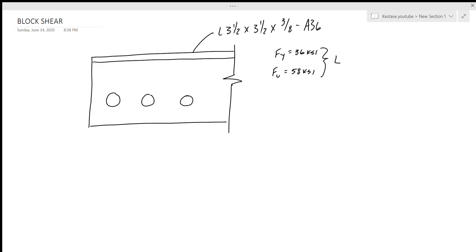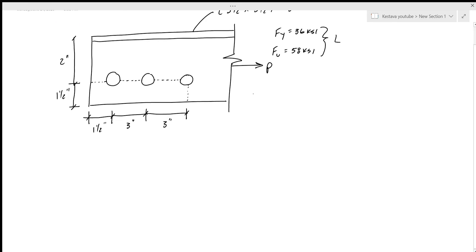We want to know the block shear strength of this member. What that means is if we were to put some load P here, how much capacity does our connection have in block shear? So this would be your block shear path.